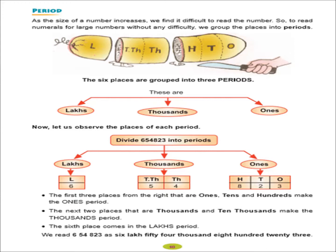Now, our next topic is period. Now, the question is, what is period? And what are the uses of period? As the size of a number increases, we face difficulty to read the number. So, to read the numerals of large numbers without any difficulty, we group the places into periods. We start grouping of the number from right to left. As we are seeing in this picture, here, the 6 places are grouped into 3 periods. In other words, you can see that separation of a place value into groups are called periods.